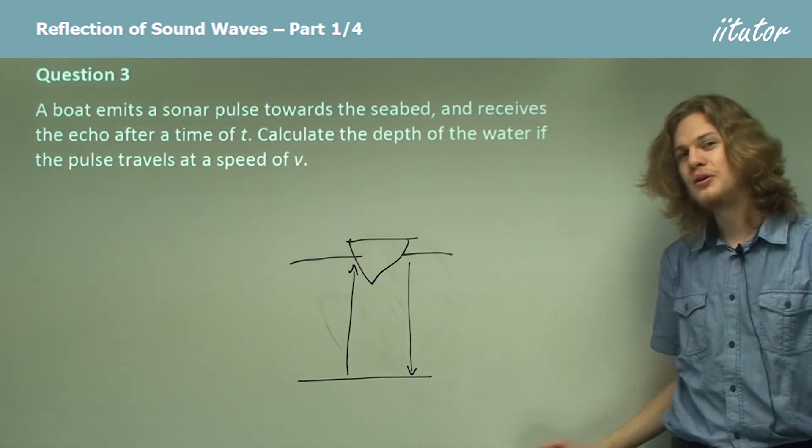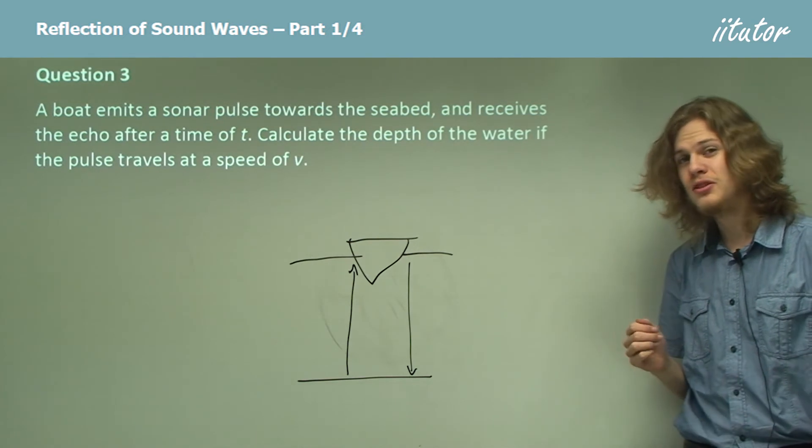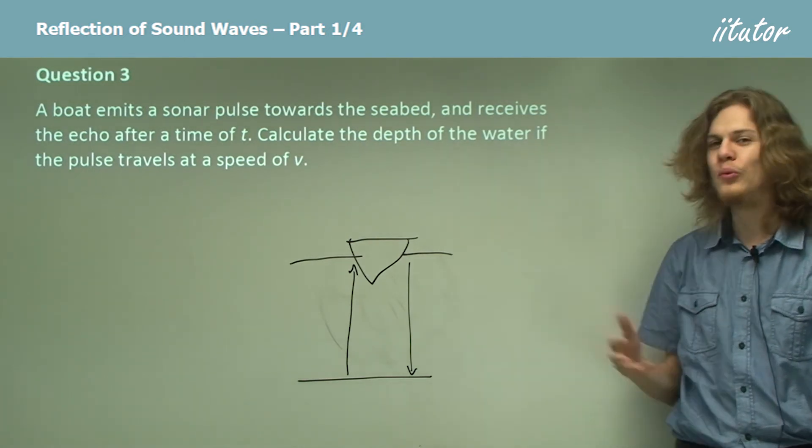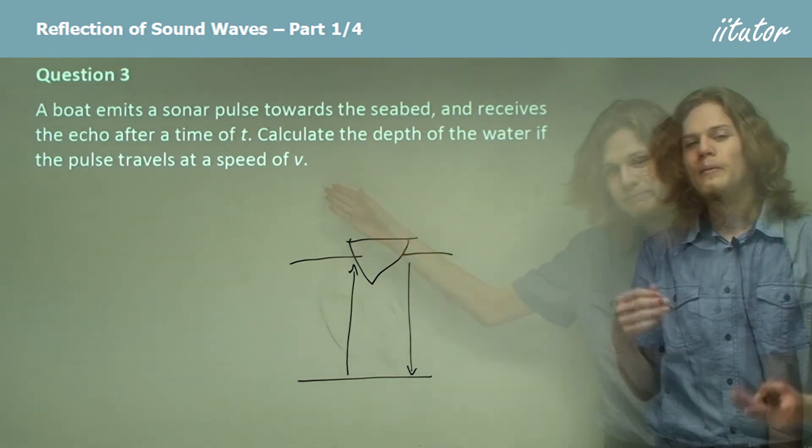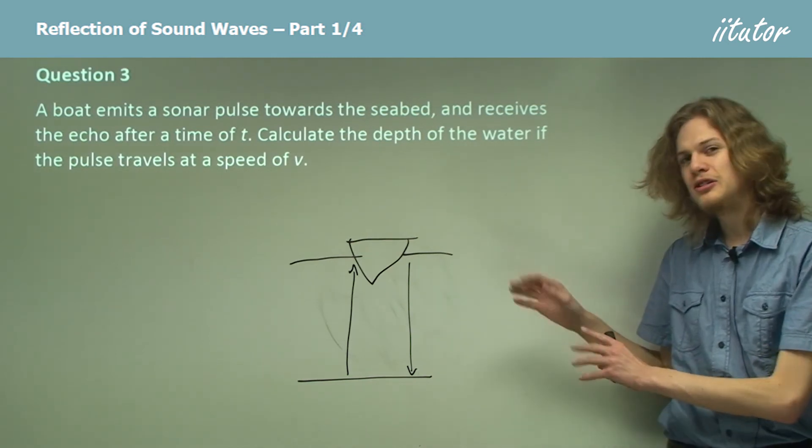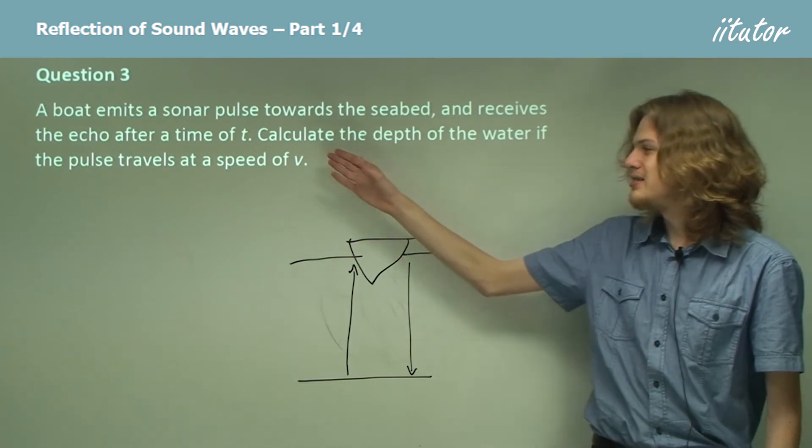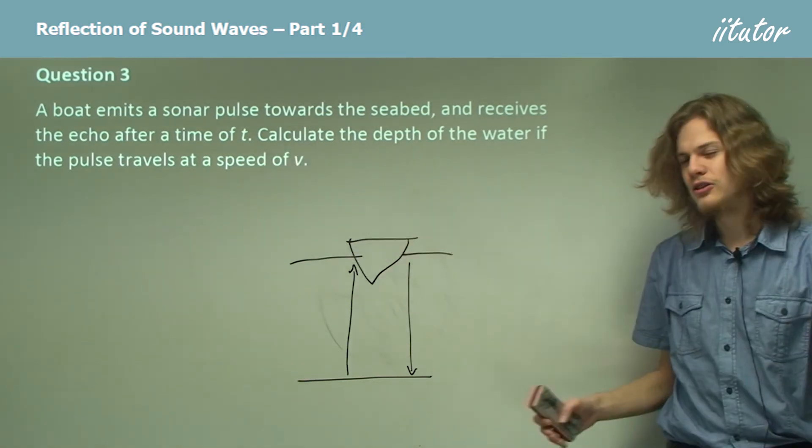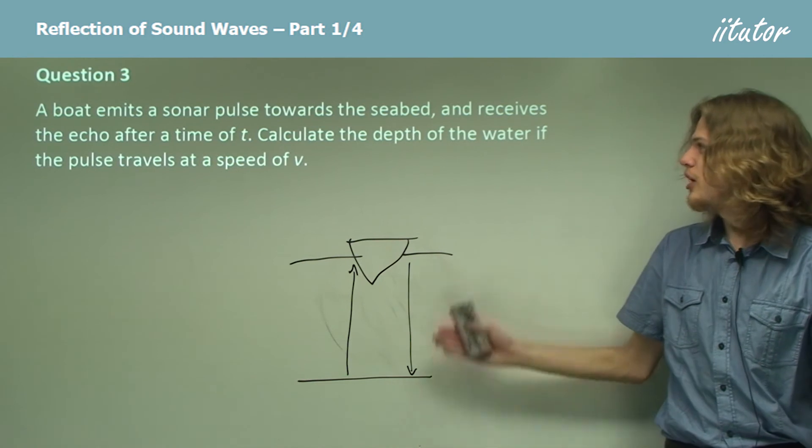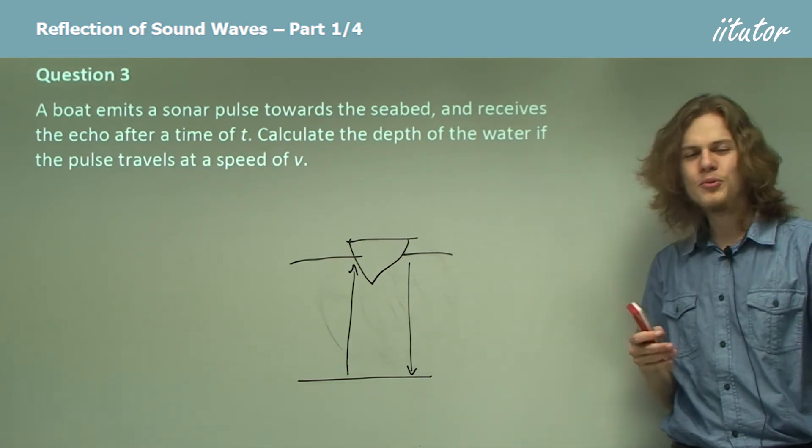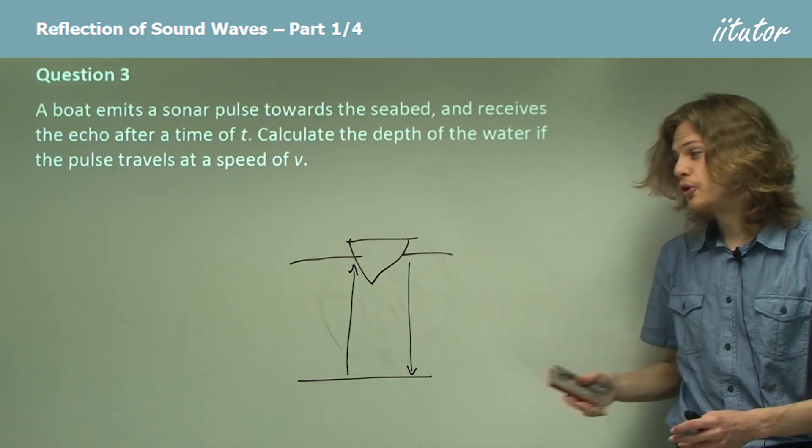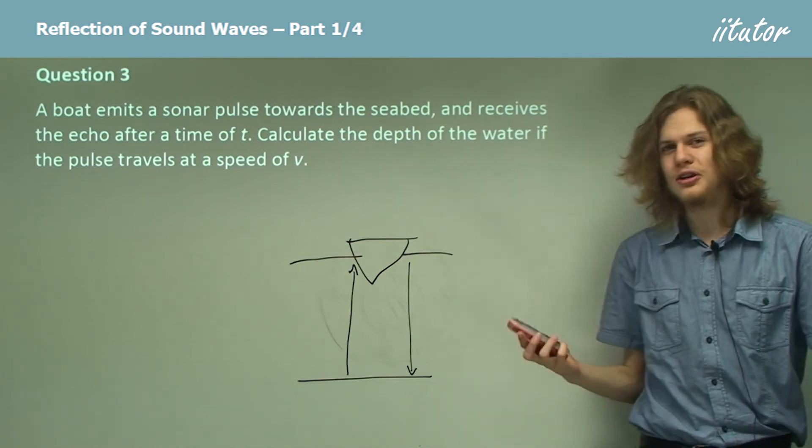Remember that we'll be measuring things in SI units most of the time. In this case we don't need to worry about units because all we have is algebra, but in most applications, because the pulse will travel so quickly, we'll be using seconds to measure t. Alright, so if it takes half the time to go down and half the time to go back up, then how can we calculate the depth? Well, we only really need one branch of the journey, don't we?